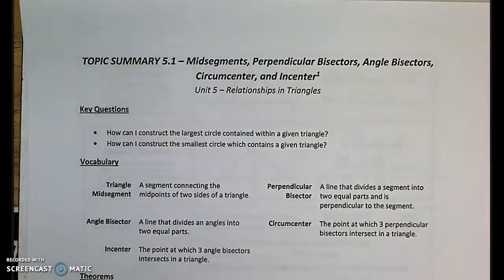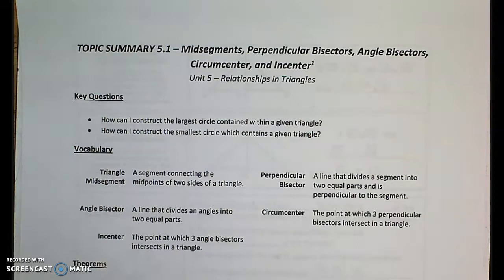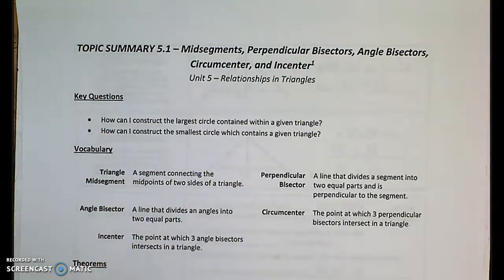In this topic, we're going to consider two questions in particular. How can I construct the largest circle contained within a given triangle? And how can I construct the smallest circle which contains a given triangle — so how can I construct a triangle within a circle?